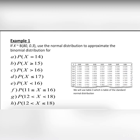In this video, we will solve Example 1. If X is binomially distributed by 80, 0.3, use the normal distribution to approximate the binomial distribution for all the following questions. To solve this question, we have to use Table 3, which is the table of standard normal distribution.